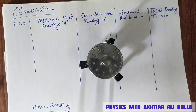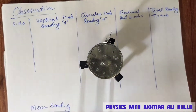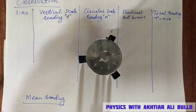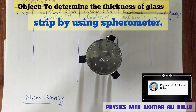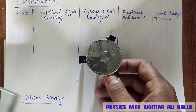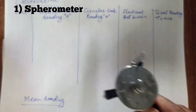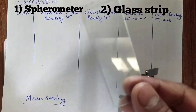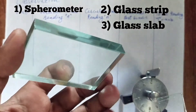Today we will perform an experiment. The object is to determine the thickness of a glass strip by using a spherometer. The apparatus which is required is a spherometer, glass strip, and glass slab.